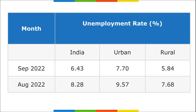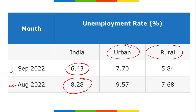Specifically, in August the unemployment rate was 8.28% and in September it came down to 6.43% for the whole of India. Separate figures for urban and rural areas are also available for both months.